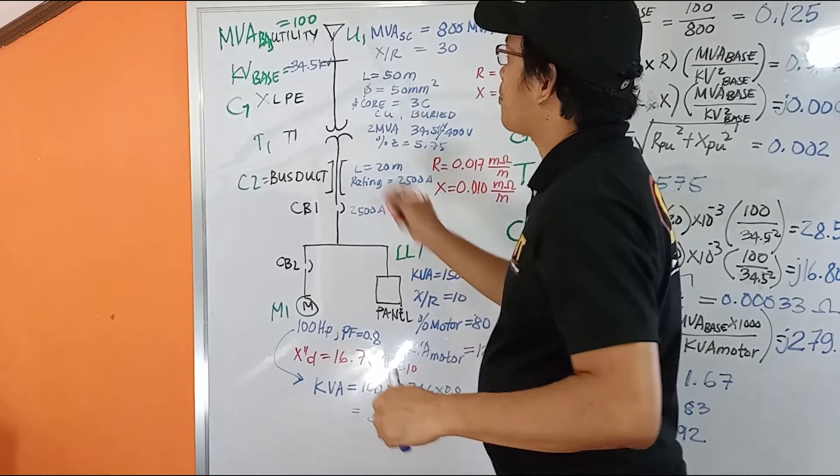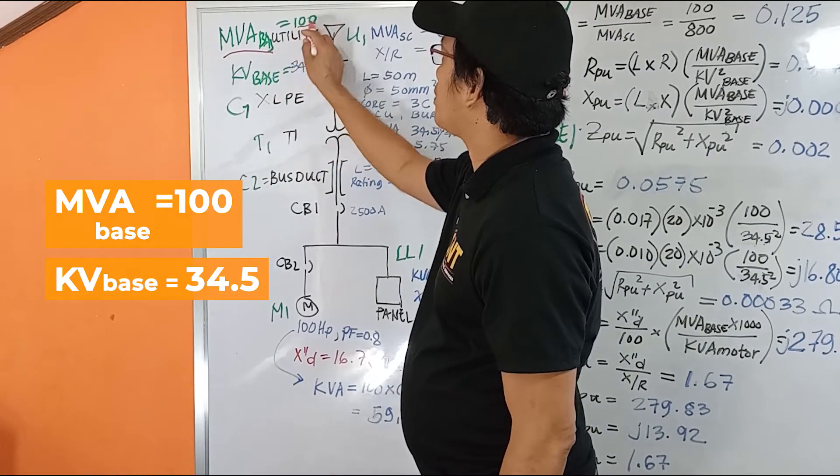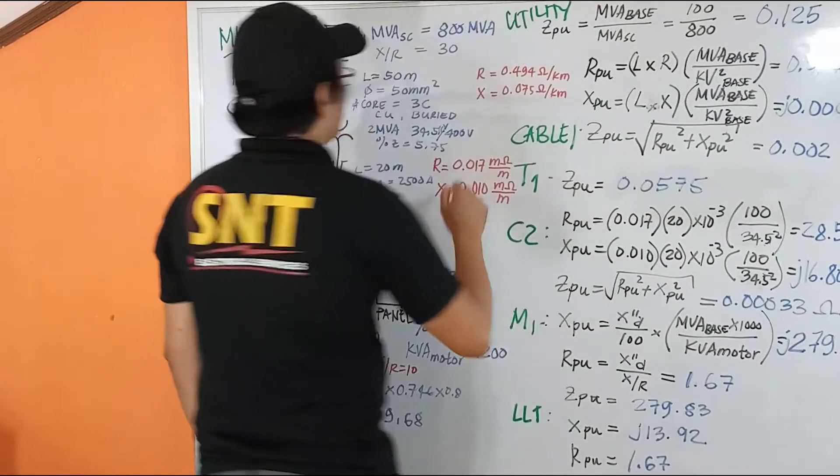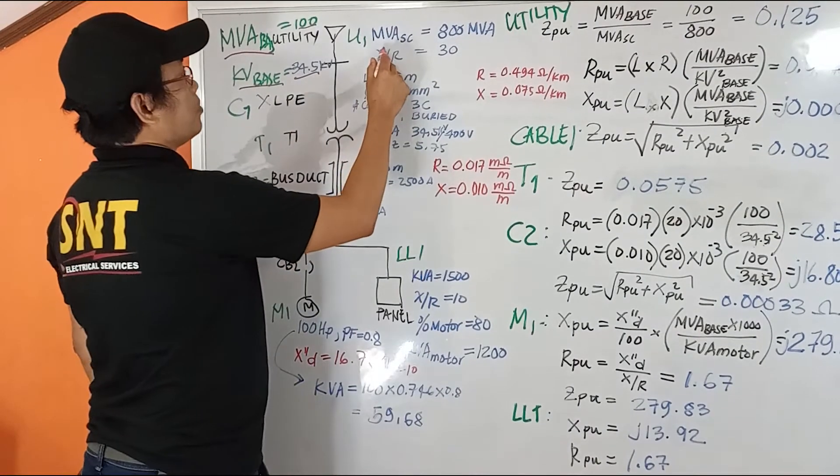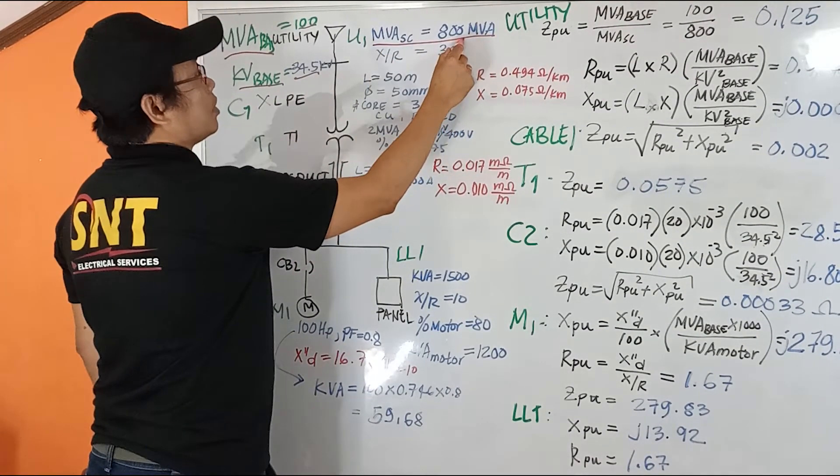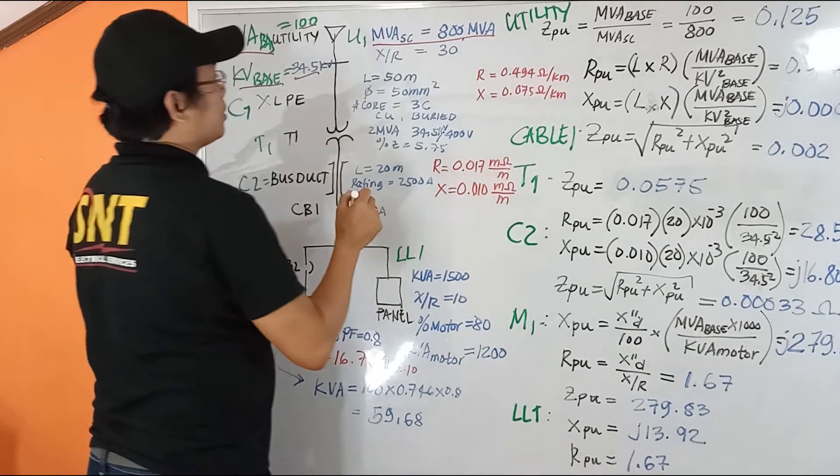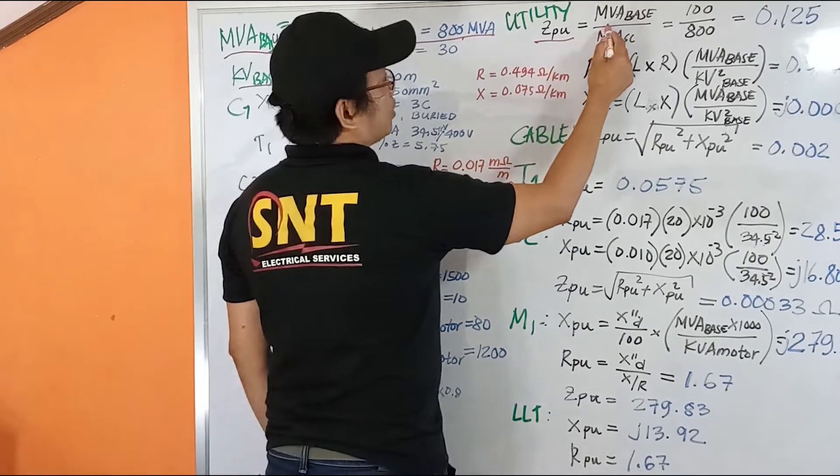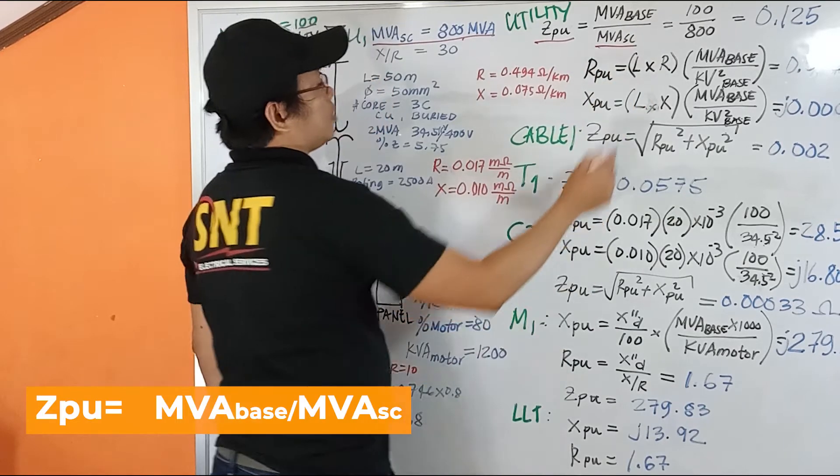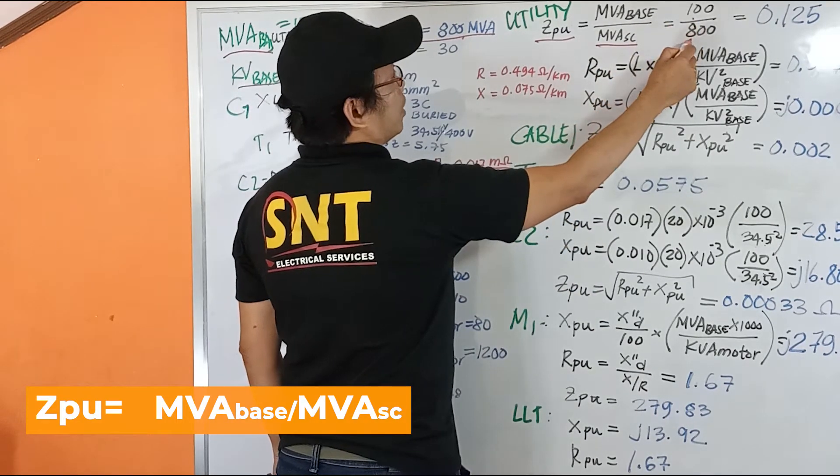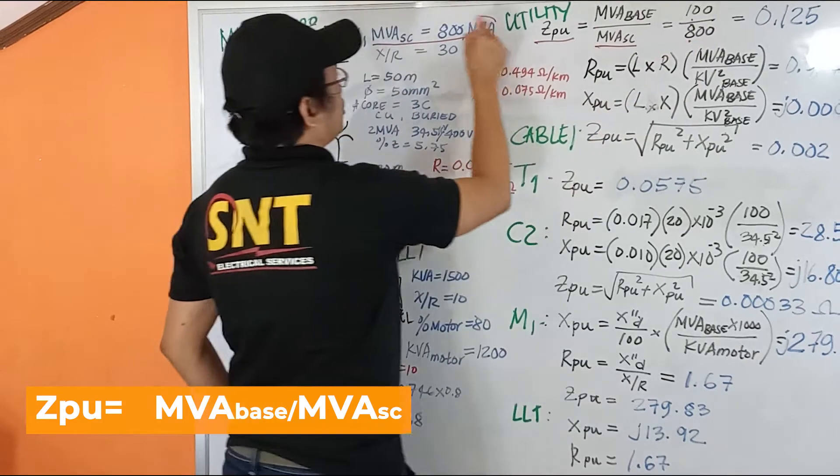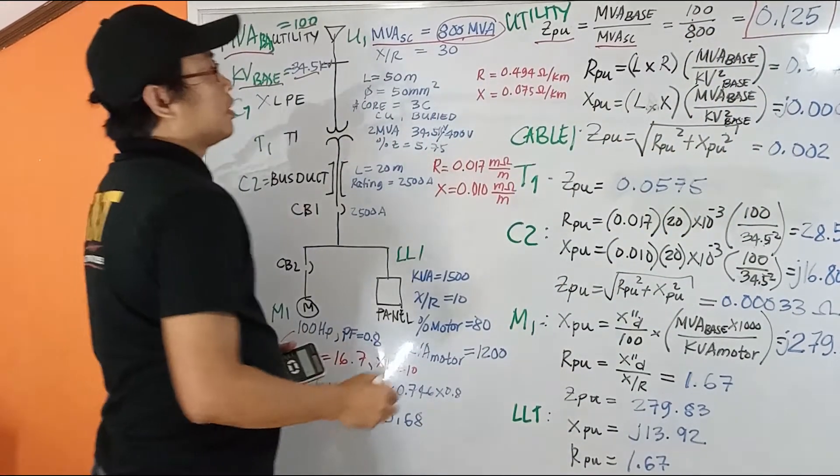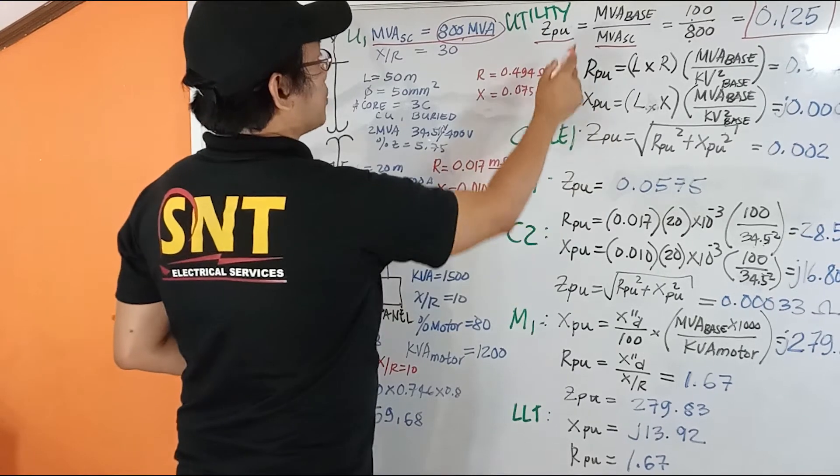So let us use the MVA base of 100 and the kV base of 34.5 kV. The given MVA short circuit of the utility is 800 MVA, and we calculate the per unit impedance using MVA base over the MVA short circuit. Given our MVA base at 100 and 800 as our MVA short circuit, we get this value: 100 over 800. That's for our utility.